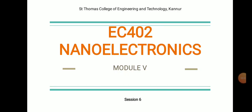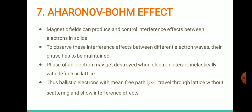Welcome to the sixth session of a nano electronic series of video lectures. In this session we shall discuss about one effect that magnetic field can produce in nanostructures: the Aharonov-Bohm effect.